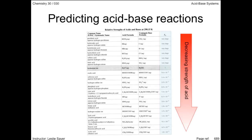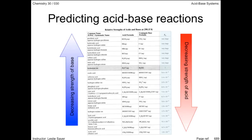The trend continues on page 9 of your data booklet. Starting with the hydroxide ion at the bottom of page 9, the trend for the conjugate base is that they decrease in strength as they go up toward the top of the page.